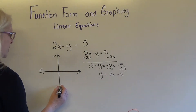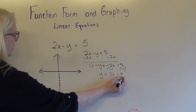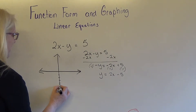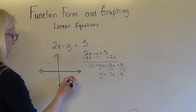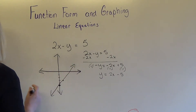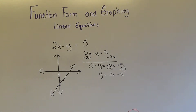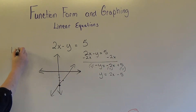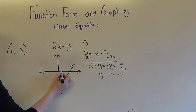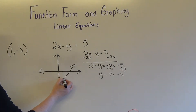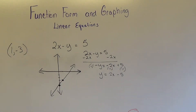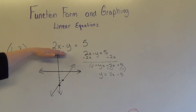From here it would be really simple to graph this. This number — negative 5 — is the y-intercept, and the 2 is the slope, so I go up 2 and over 1 to get my line. The ordered pair (1, negative 3) that we said yes to — if I go 1 over and down 3, that point lies right on this line. You can come up with many other points by plugging in values for x and y into this equation.